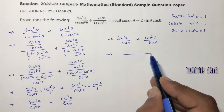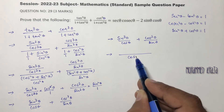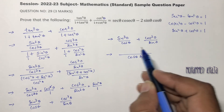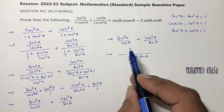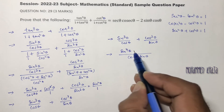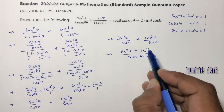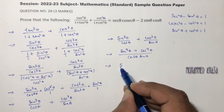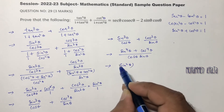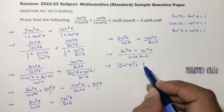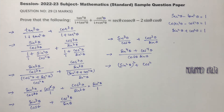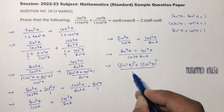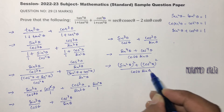Now take LCM as cos theta sin theta. Multiplying through, the numerator becomes sin power 4 theta plus cos power 4 theta, all over cos theta sin theta. We can write this as sin square theta whole square plus cos square theta whole square, divided by cos theta sin theta.